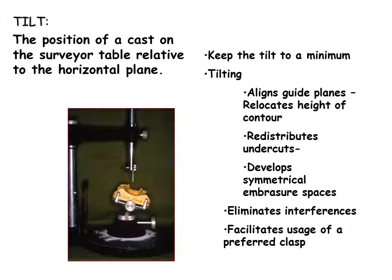A correctly trimmed cast is attached to the survey table. The base should be flat with no rocking, and the occlusal plane is level with the table — that is, at zero tilt. Tilting the cast anteriorly and posteriorly is performed until the most favorable alignment of potential guide planes is located. Bony protuberances and misaligned teeth are examined and noted. Areas of possible retention are analyzed. Lateral tipping may be used to relocate the undercut relative to the height of contour. By doing this, a preferred clasp may be employed. It should be noted that undercut cannot be created by tipping the cast.